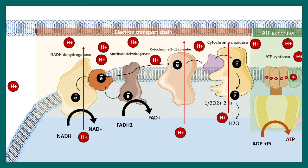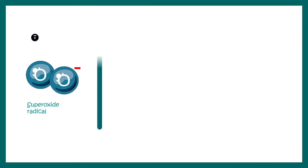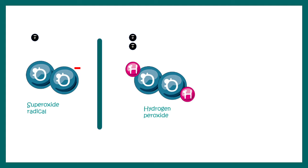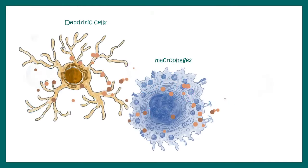If oxygen receives four electrons, it would be converted into two molecules of water — and that's fine. But under some circumstances, if oxygen receives just one electron, it becomes superoxide radical. If it receives two electrons, it becomes hydrogen peroxide. If it receives three electrons, it becomes hydroxyl radical. All of these are pretty dangerous for our body.